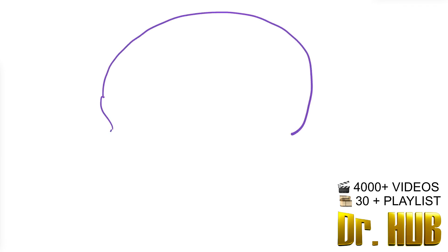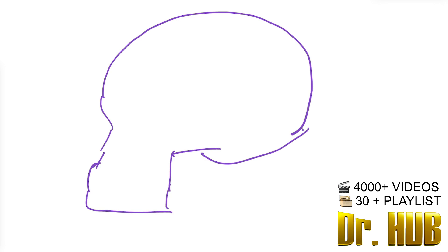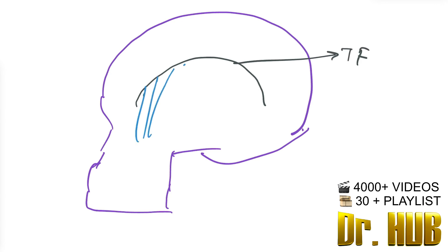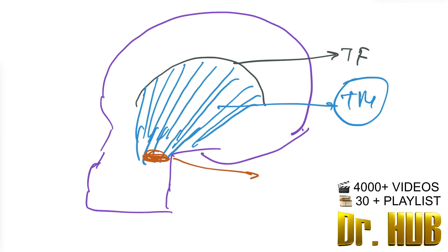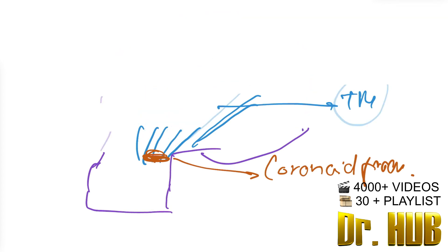Let's draw a rough diagram of the temporalis. Here we have the temporal fascia (TF) and the temporalis muscle, with the attachment site at the coronoid process. That was a visualization of the temporalis muscle.